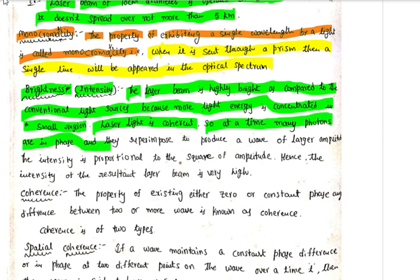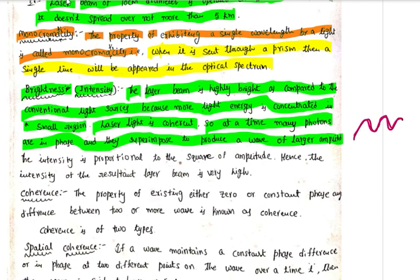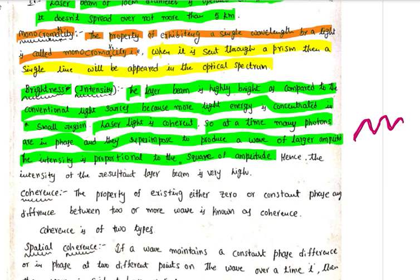At any given time, many photons are in phase and superimpose to produce a wave of larger amplitude. When waves of the same phase maintain the amplitude, the resultant amplitude increases. Since intensity is directly proportional to the square of the amplitude, the intensity of the resultant laser beam is very high.